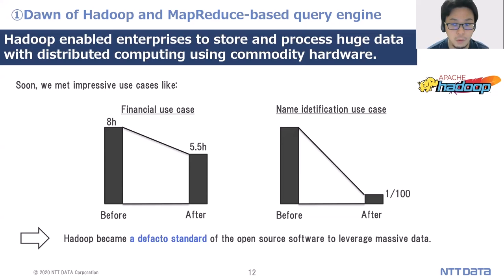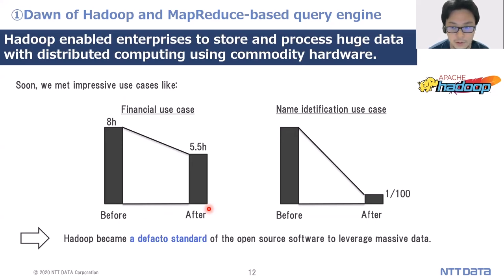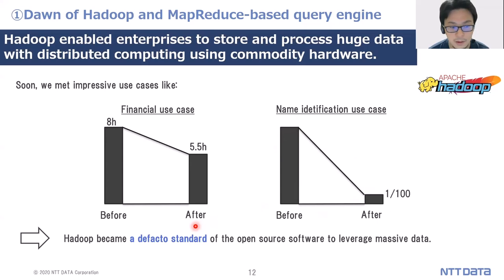Soon we found impressive use cases. The left side example is a financial area use case: Hadoop reduced the processing time from 8 hours to 5.5 hours. The right side is another use case where we executed a name identification process and processing time was dramatically reduced. Hadoop became a de facto standard of open source software to leverage massive data.